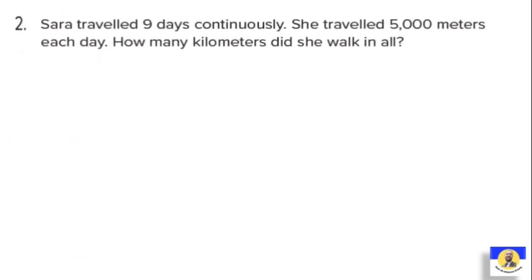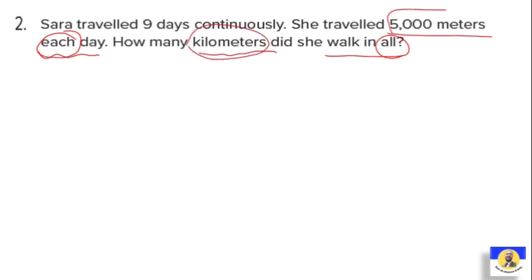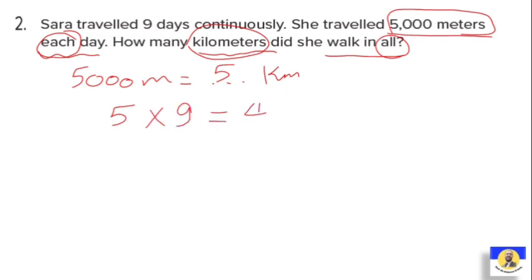Question 2: Sara traveled nine days continuously. She traveled 5,000 meters each day. How many kilometers did she walk in all? Sara travels 5,000 meters each day — we first convert to kilometers: 5,000 ÷ 1,000 = 5 kilometers per day. Then we multiply: 5 × 9 days = 45 kilometers in nine days.